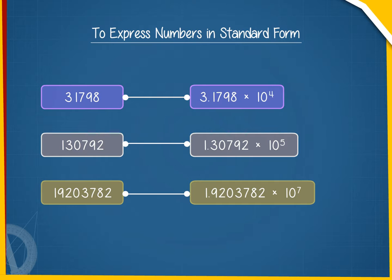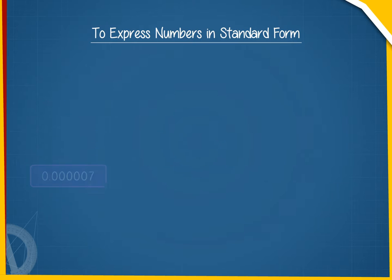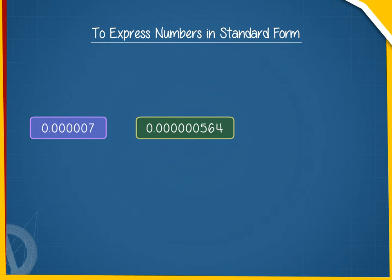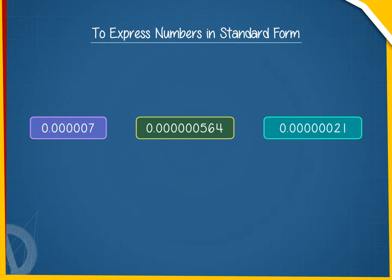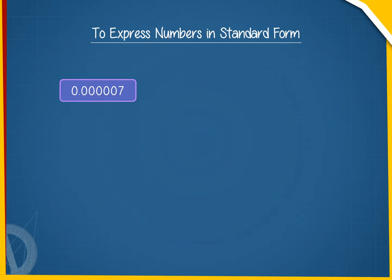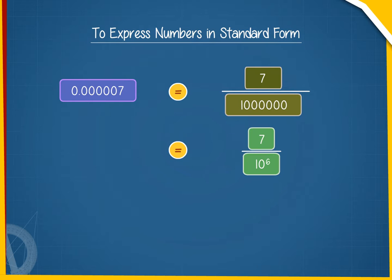Let us write some more numbers, each of which is less than 1. (a) 0.0000007. This number can be written as 0.0000007 = 7 ÷ 10⁶ = 7 × 10⁻⁶.